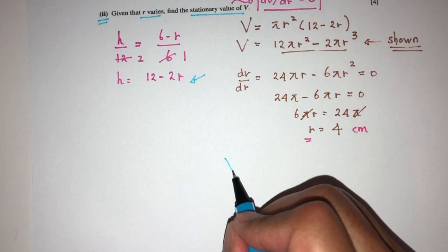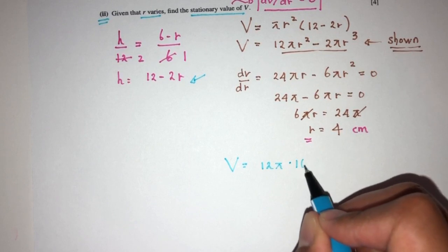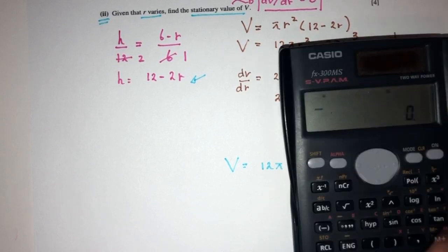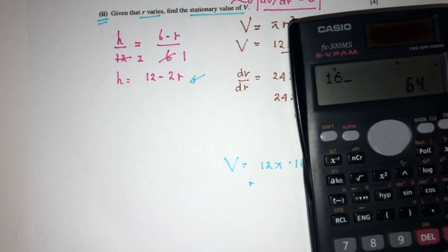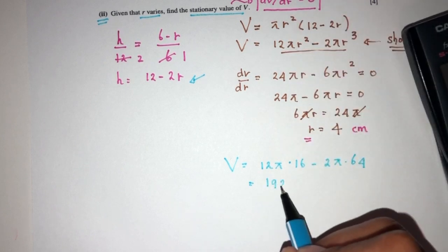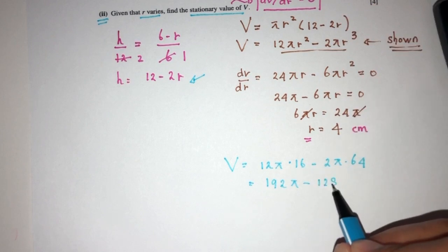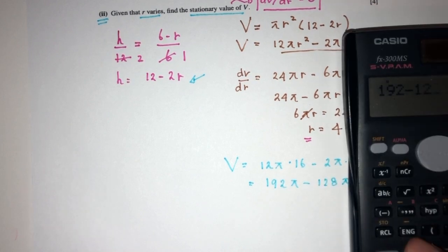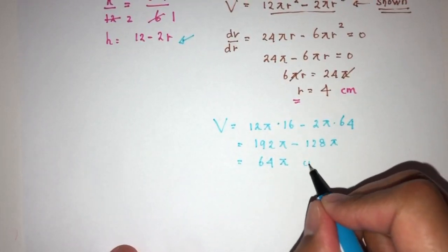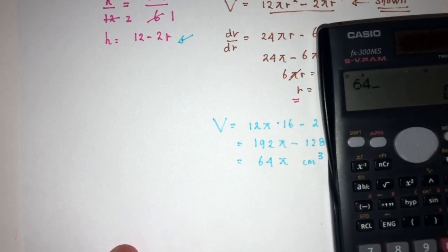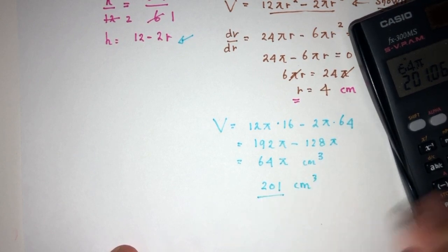So replace back in your main equation for V, that will be 12π R, R² is 16, minus 2π R³, that should be 4³, that should be 64. That should be 16 times 12, that should be 192π minus 64 times 2, that should be 128π. So 192 minus 128, that should be 64π. That will be centimeters cubed. Or you can find the value as well, that should be 201 centimeters cubed, correct to 3 significant figures.